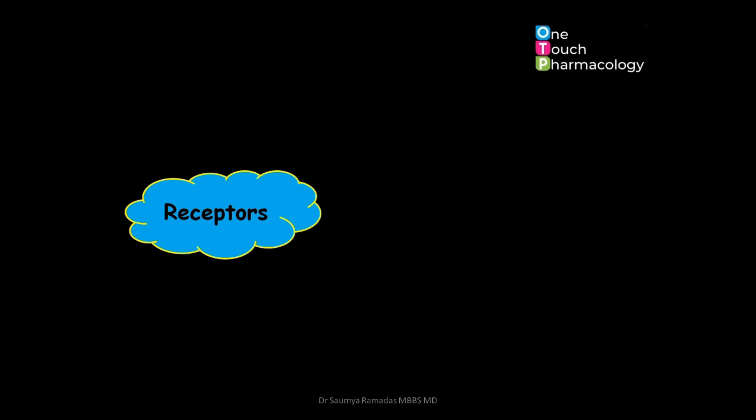How does the body sense changes in plasma osmolality, blood volume, blood pressure, or oral salt load? There are specialized receptors present in the body — osmosensitive receptors present in the central nervous system: the subfornical organ, the organum vasculosum of the lamina terminalis, and the median preoptic nucleus. The threshold for release of antidiuretic hormone in response to changes in plasma osmolality is 280 milliosmoles per kg.